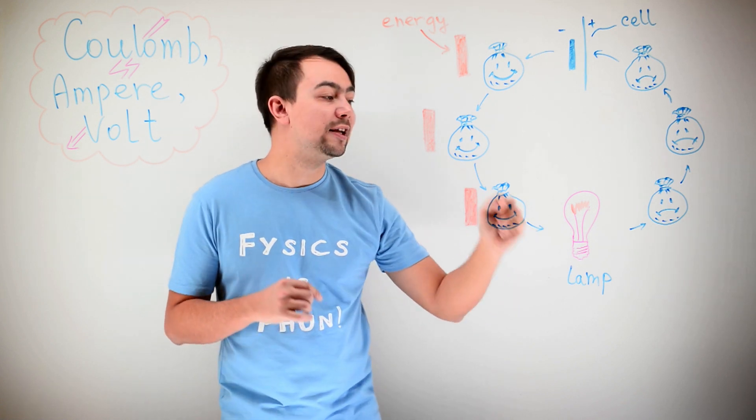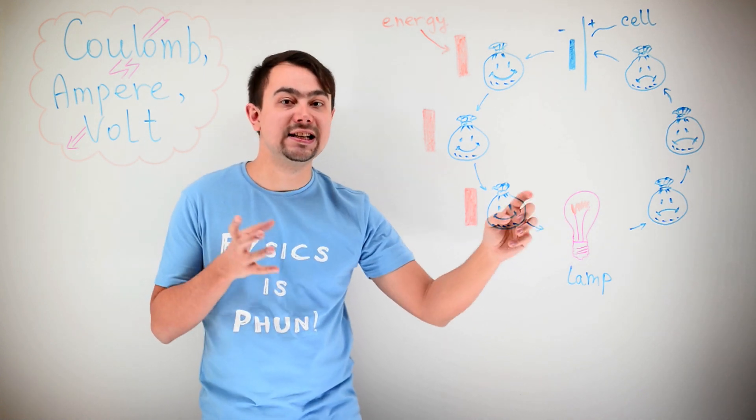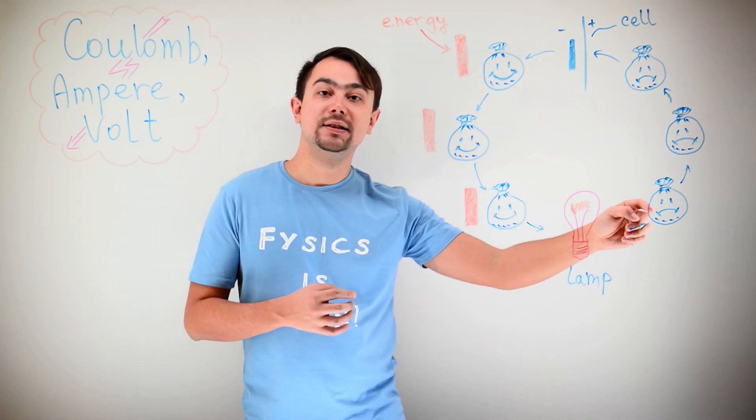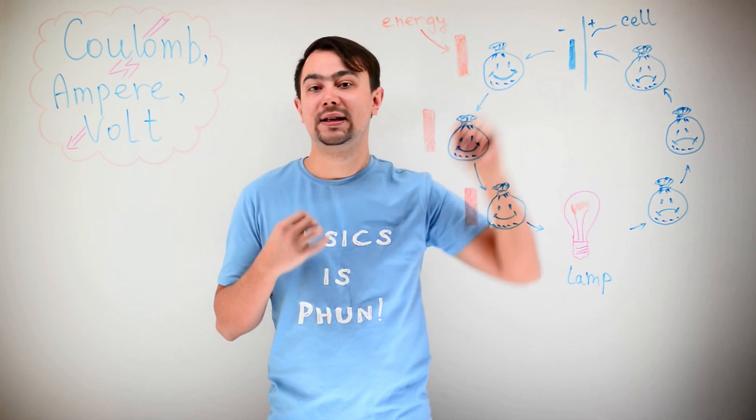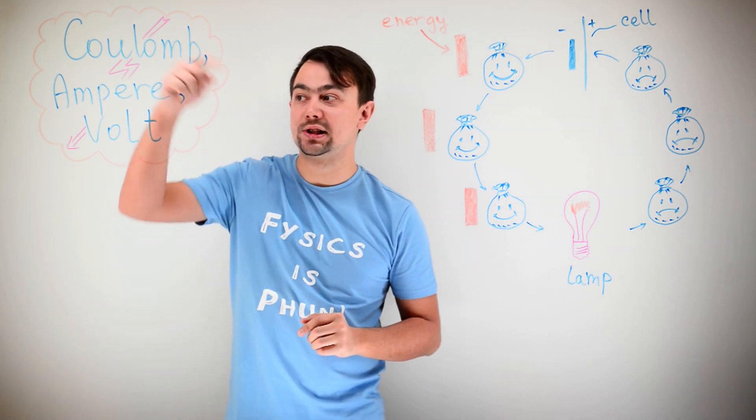And the electrons carry this energy to the lamp. In the lamp, the energy is transferred as light and heat. And then, the electrons go back to the cell to fetch some more energy. So, we've discussed what is a Coulomb.